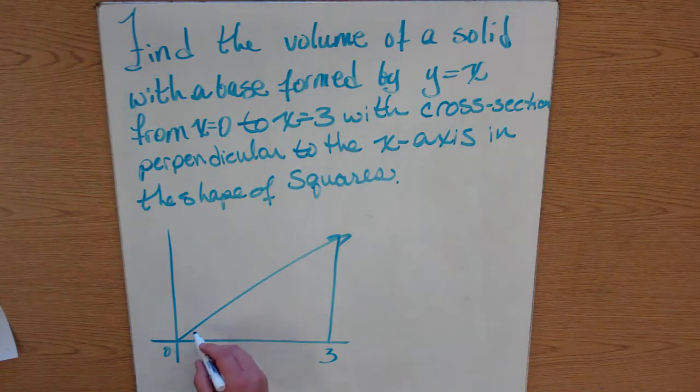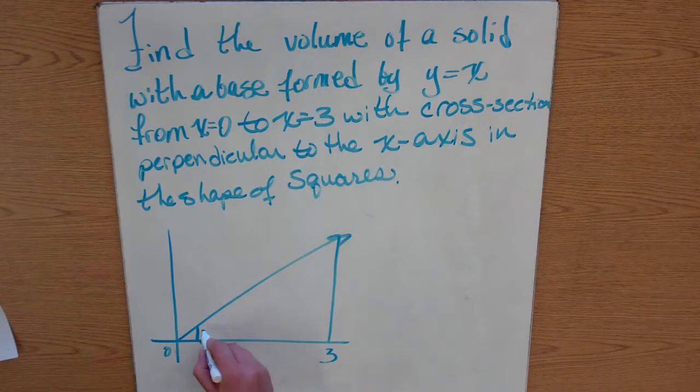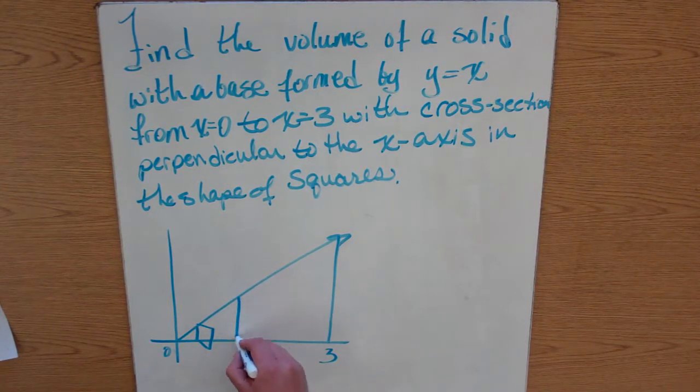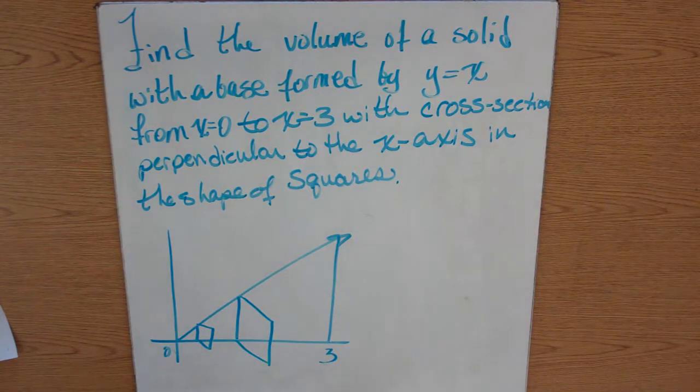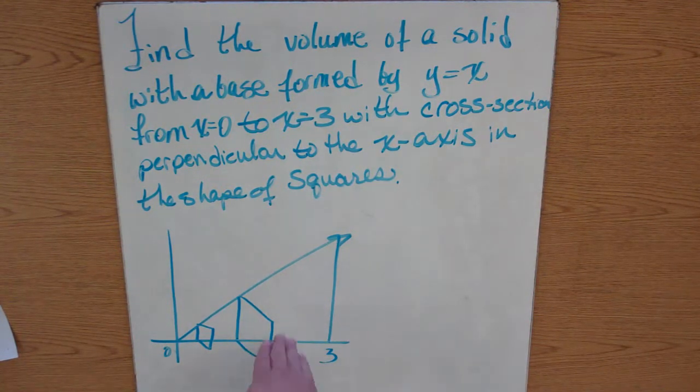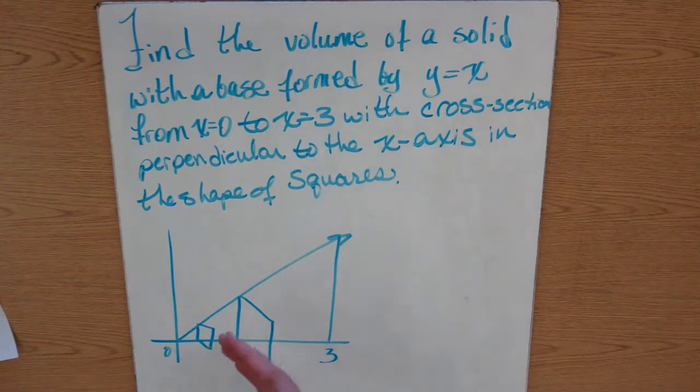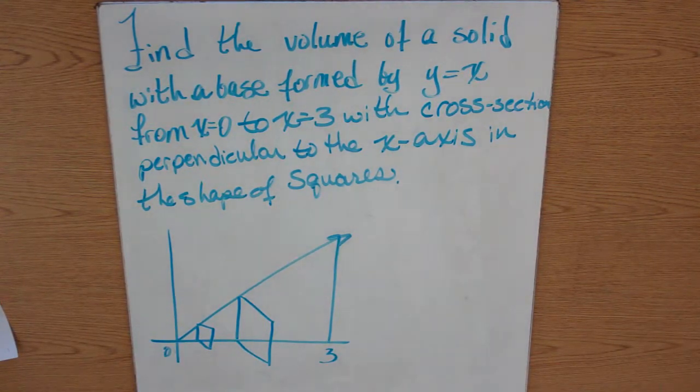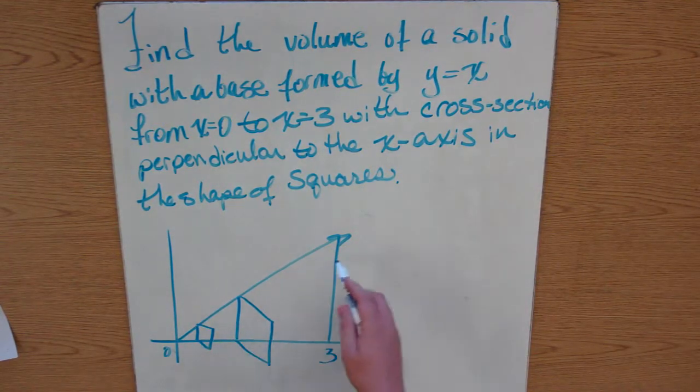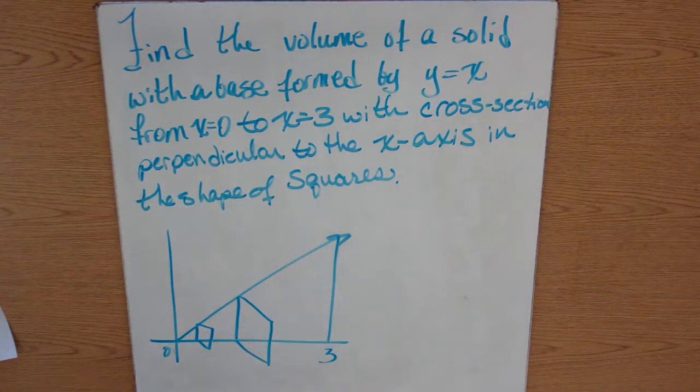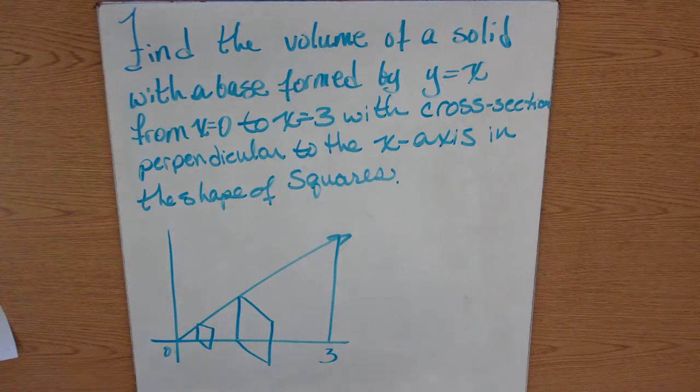What that means is, our squares are going to look like this. If you can imagine my 3D drawing, these are perpendicular to the x-axis, so these would be standing straight up out of the board basically. It's still, you still solve it the same way. We want all this area under here, but now our cross sections are squares.